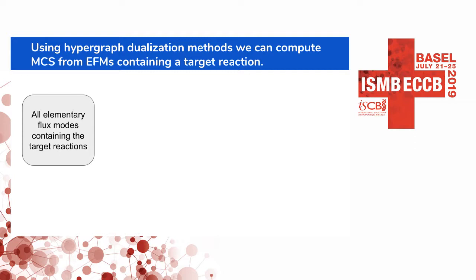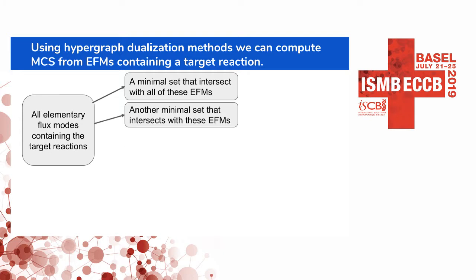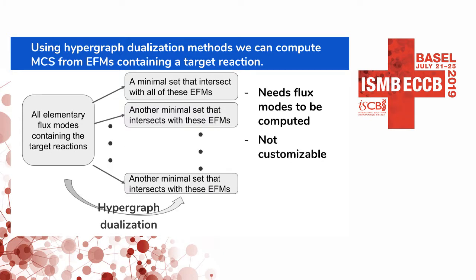There are various methods for hypergraph dualization. We give the method every elementary flux mode containing the target reaction, and it computes a minimal set of reactions that intersects with all of these elementary flux modes. Removing these sets eliminates all those elementary flux modes, which causes the target reaction to get blocked. However, these traditional approaches have downsides: they require flux modes to be computed, which usually requires a time-consuming preprocessing step, and they are not customizable like newer methods.